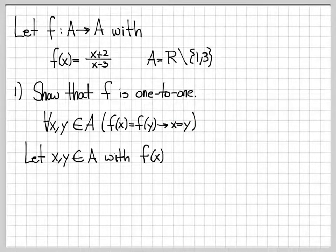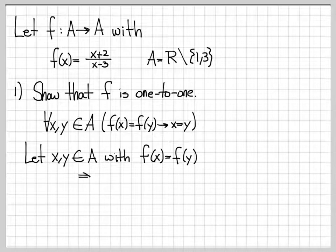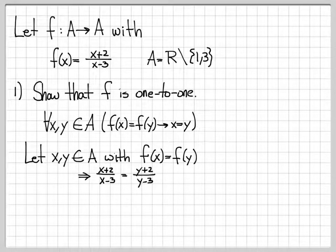Let's show that this is true. Let x and y be in A, and let's assume that f(x) = f(y). If this is a one-to-one function, we need to show that x = y, and we can do that by direct computation. f(x) is (x + 2)/(x - 3), and we set that equal to f(y), which is (y + 2)/(y - 3).